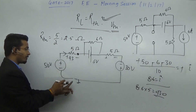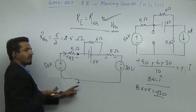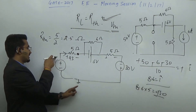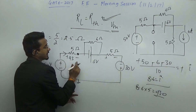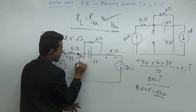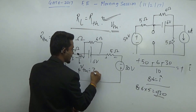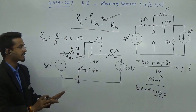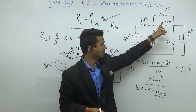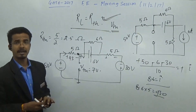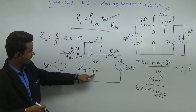Starting from 0, incrementing minus to plus, I get the upside with 50 volts, then downside plus to minus with 43. So the potential will be 7 volts with respect to ground. That means VTH will be 7 volts.